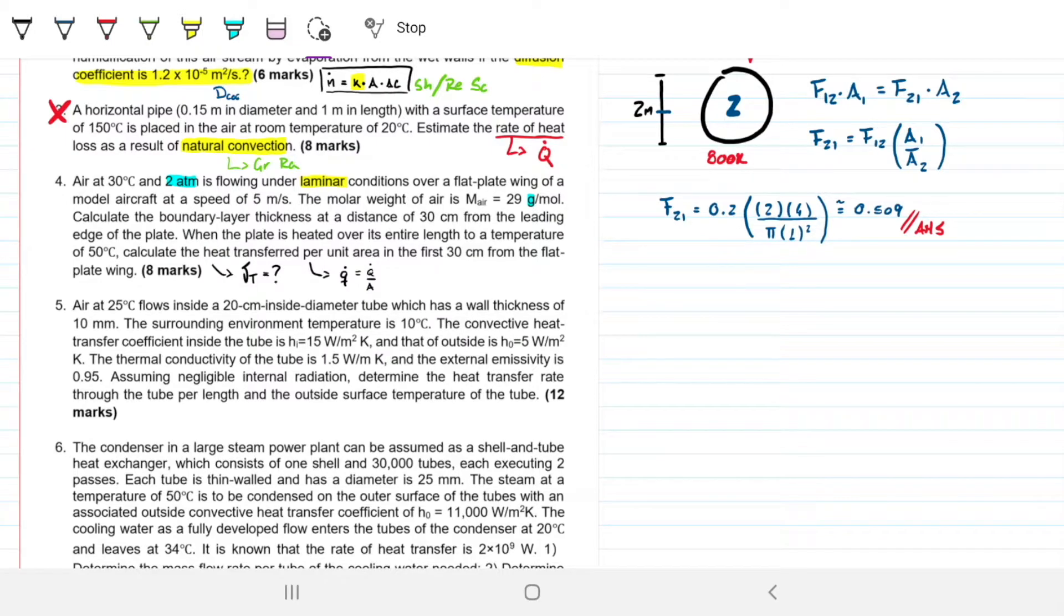Today we'll continue our quest to solve the 2020 final on heat and mass transfer. We already did number one, number two, number three, and number four, this one has gone two, and now we move on to question number five. There's actually 12 marks available for this question.